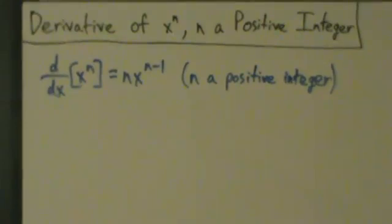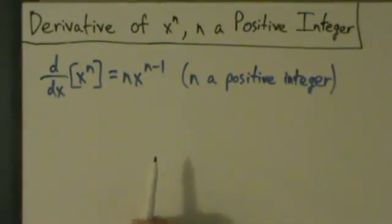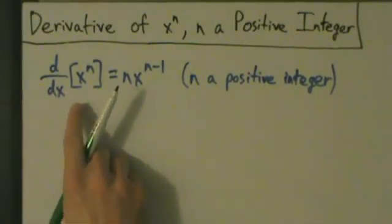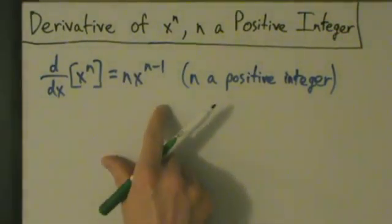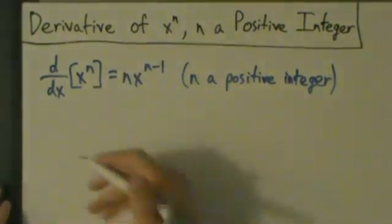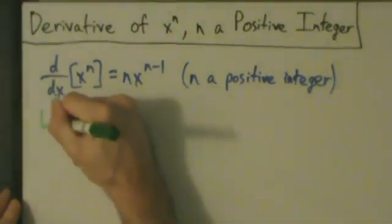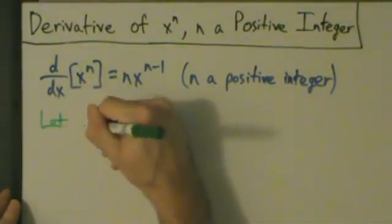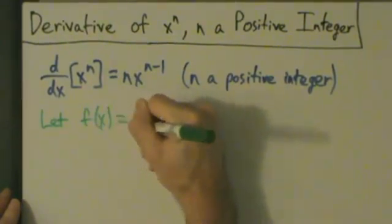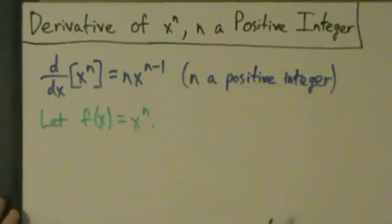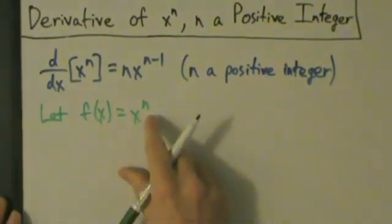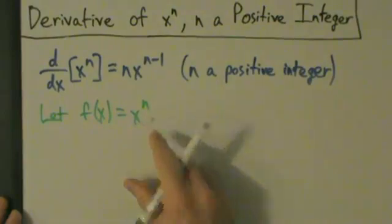So we want to show that the derivative of x to the n equals nx to the n minus 1. Let f of x equal x to the n, where n is any positive integer at all.